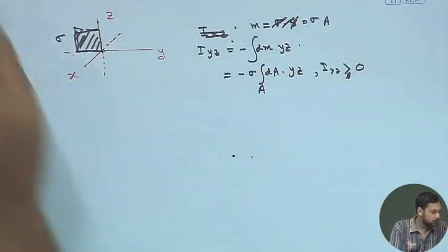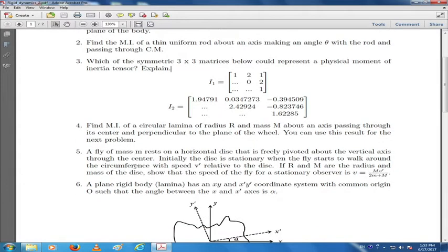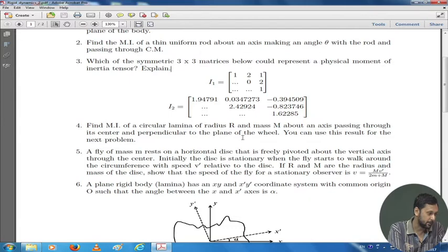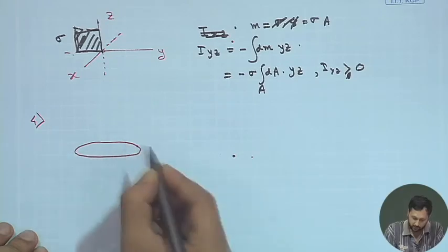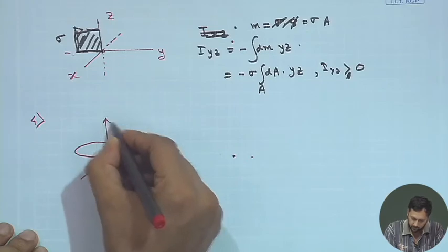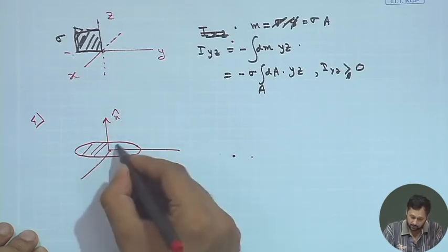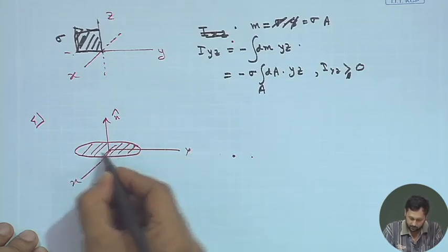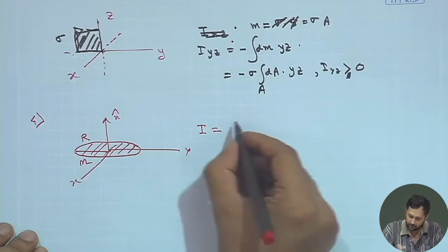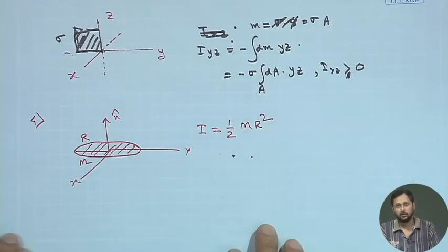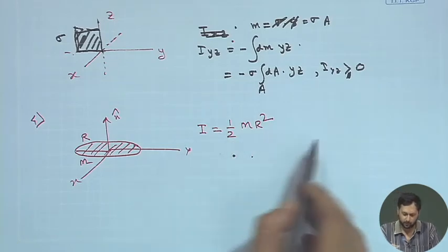Let us move on to Problems 4 and 5, which are closely related. Problem 4: find the moment of inertia of a circular lamella of radius R and mass M about an axis passing through its centre and perpendicular to its plane. This is a very simple and well-known result — a circular lamella has I = ½MR².